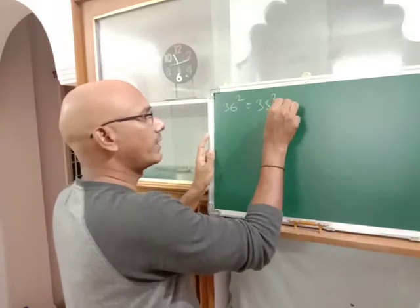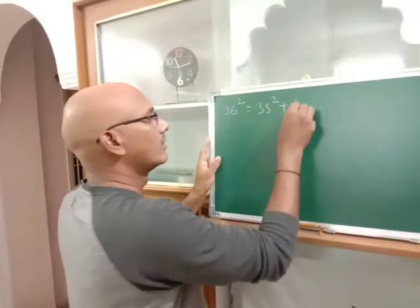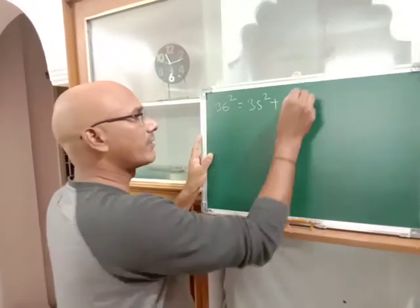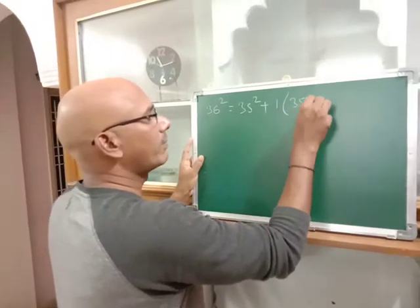So 35 squared plus the difference of 1, which means 1 times 35 plus 36.